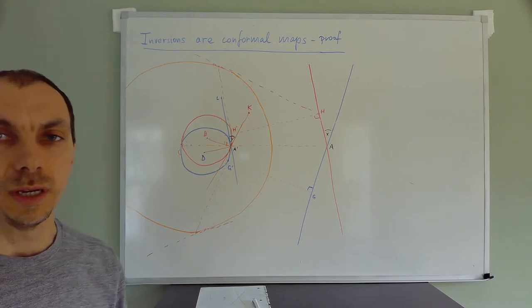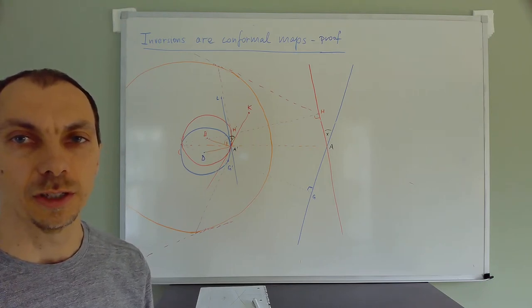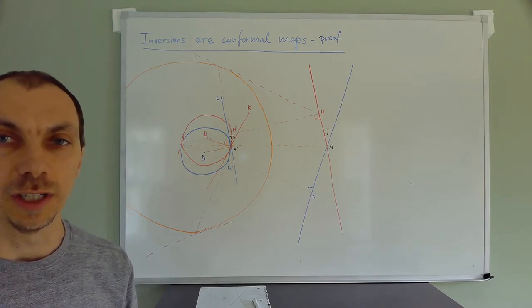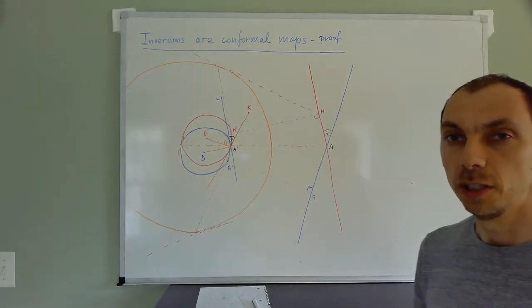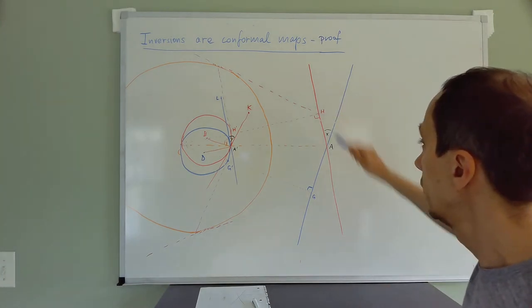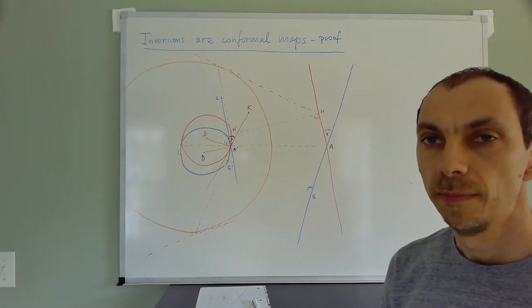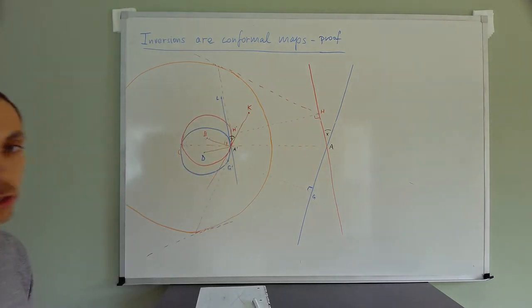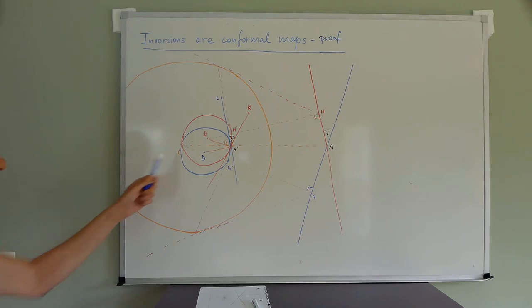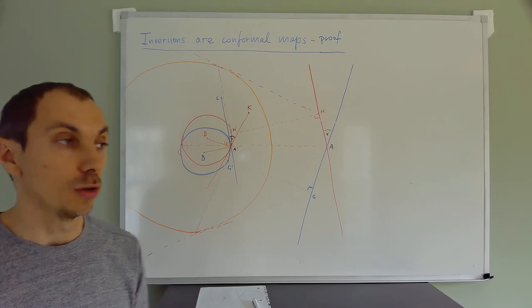You have already seen my abilities — or lack thereof — of drawing circles live on the board. Therefore, I actually prepared this picture beforehand for you, but we're going to go slowly through the various elements of that picture. So we start here by drawing two lines, the blue one and the red one. These two lines intersect at a point A and form an angle X. The orange circle is the circle of inversion and its center here is the orange C.